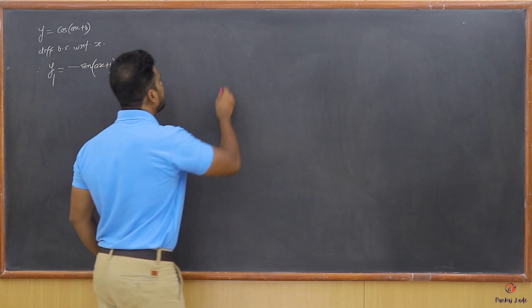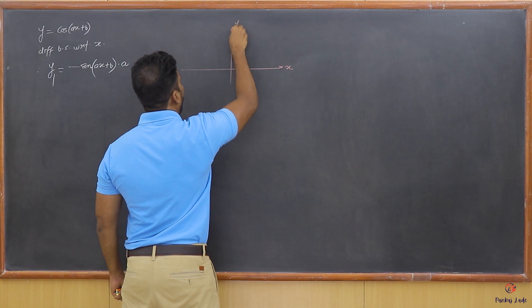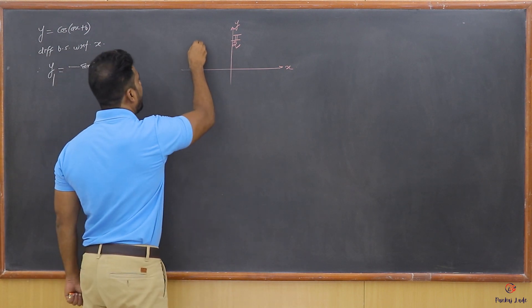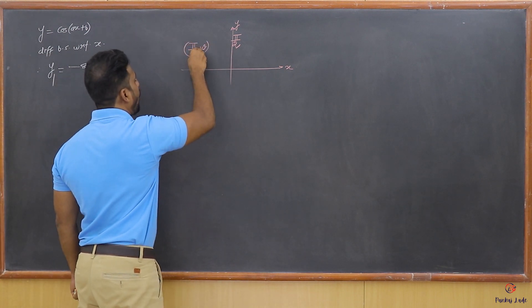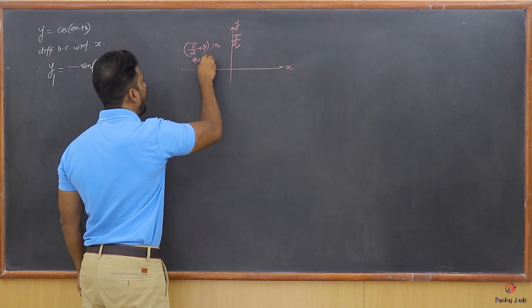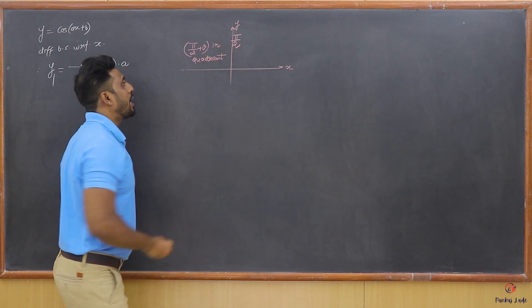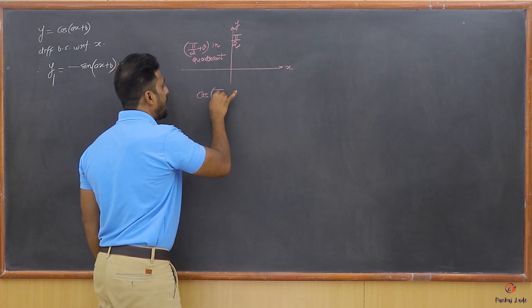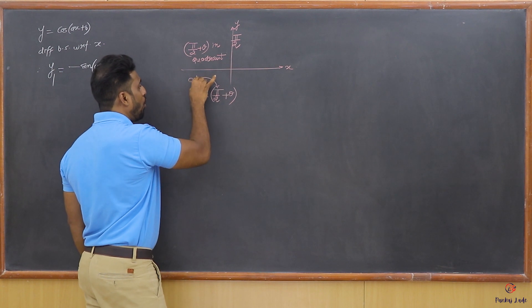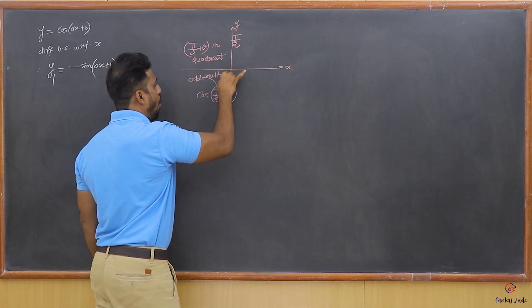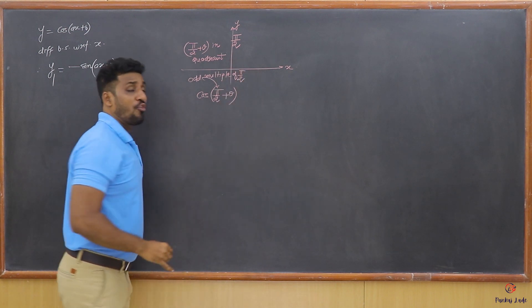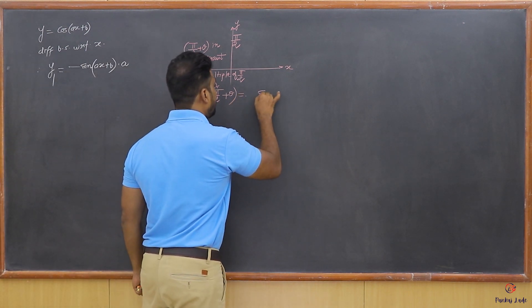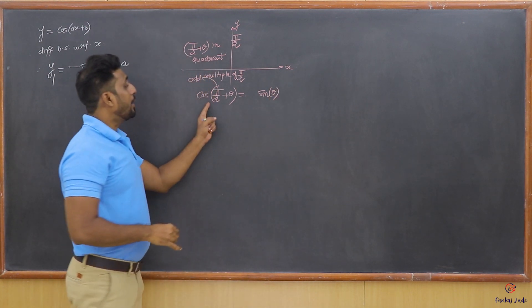So here also I am going to make use of the concept of trigonometry. Let's draw the x-axis and the y-axis. On the y-axis you have π/2, and (π/2 + θ) falls in the second quadrant. Now this is an odd multiple of π/2, so if you have an odd multiple of π/2, the trigonometric ratio is always going to change — cos is going to become sine.